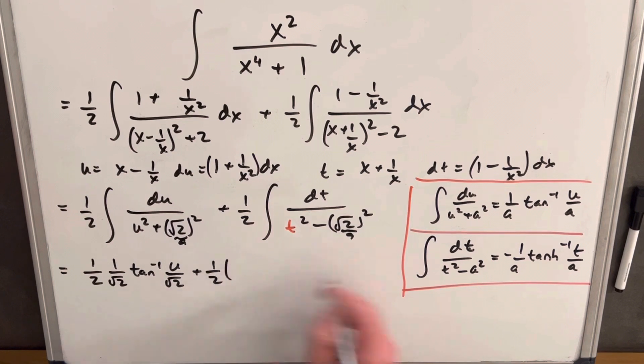Then plus 1 half. Then here, don't forget, we have this minus sign right here. So we have minus 1 over square root of 2, hyperbolic inverse tangent, t over square root of 2.